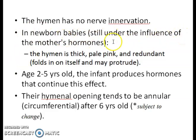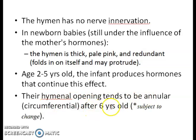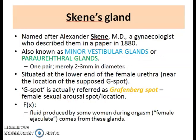The hymen has no nerve innervation. In newborn babies still under influence of the mother's hormones, the hymen is thick, pale pink in color, and redundant. Between ages two to five years, infant-produced hormones continue this effect, and the hymen opening tends to be annular or circumferential. After six years old it becomes subject to change and can naturally be torn.